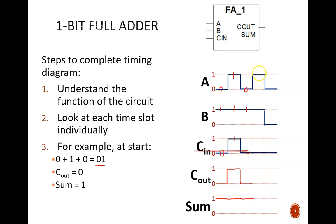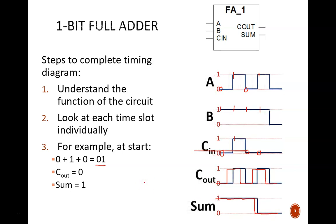Next, we have 1 plus 1 plus 0, which equals 1 0. Finally, 0 plus 0 plus 0 equals 0 0. Now the timing diagram is complete. Let me bring in the answers to see how close my scribbles lined up. Not too bad.